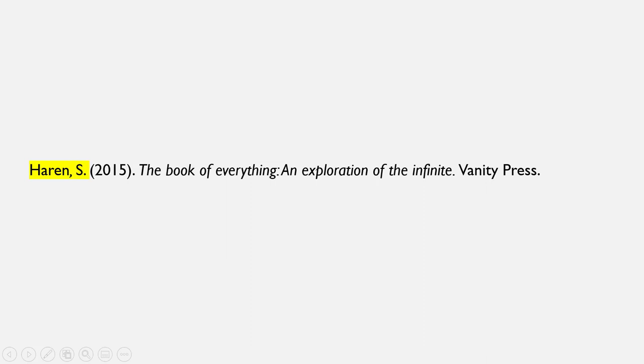I'm going to take this citation apart piece by piece and describe each part, why it's there, and how it's formatted. As this is just a basic example, I may refer to some other situations you may come across while citing sources. If at any point you need more time to make notes, feel free to pause the video and then start again when ready. The first part of most citations will be the author's name. In APA style, this is formatted last name, comma, first initial, with a period at the end of the first initial.